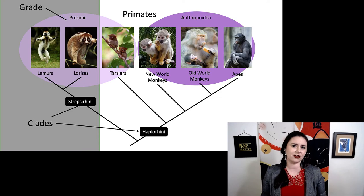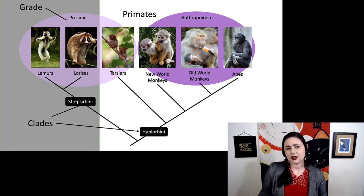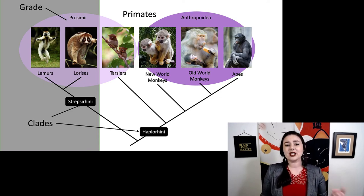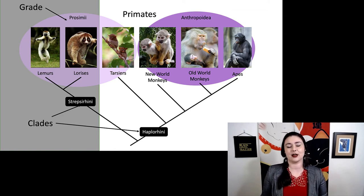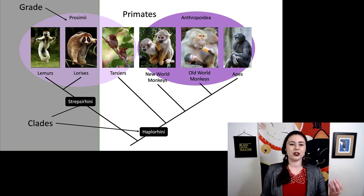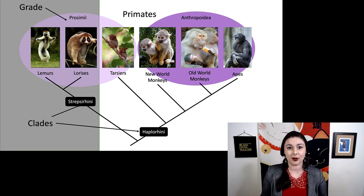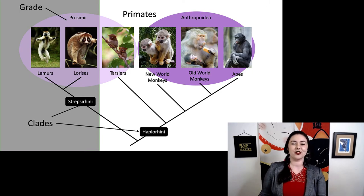Anthropoids are all diurnal, bigger, and have more social interaction. But even though tarsiers lack some of those classic anthropoid traits, that doesn't mean they aren't more closely related to them. That's why we try to get away from using these gradistic features — we do not want to use them for our taxonomy.